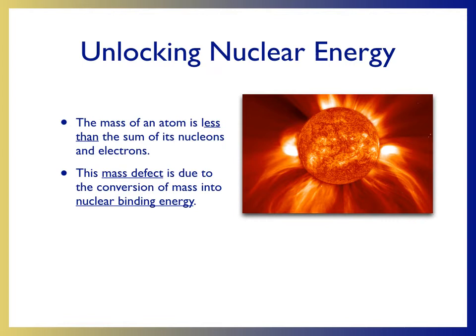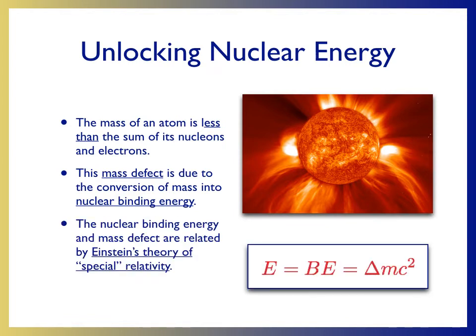When a nucleus is bound together and an atom is created, the mass that is missing is actually converted into energy. We can calculate this energy using Einstein's theory of special relativity, the famous E equals mc squared equation. Here, the energy is equal to the binding energy, or the energy that is given off when a nucleus is created, is equal to the mass defect, which is delta m, times the speed of light squared.